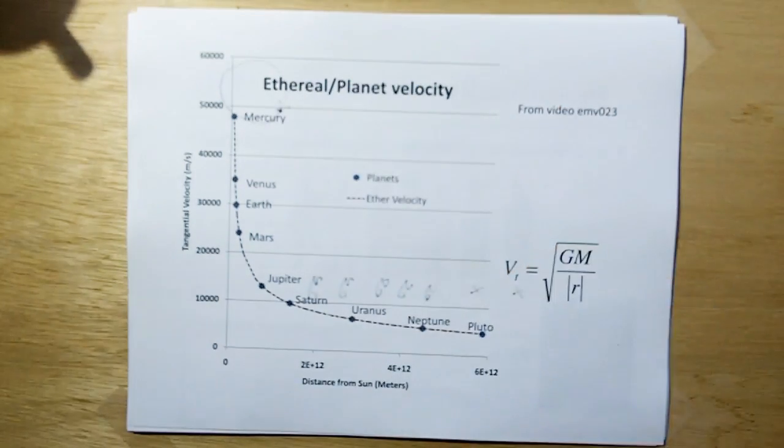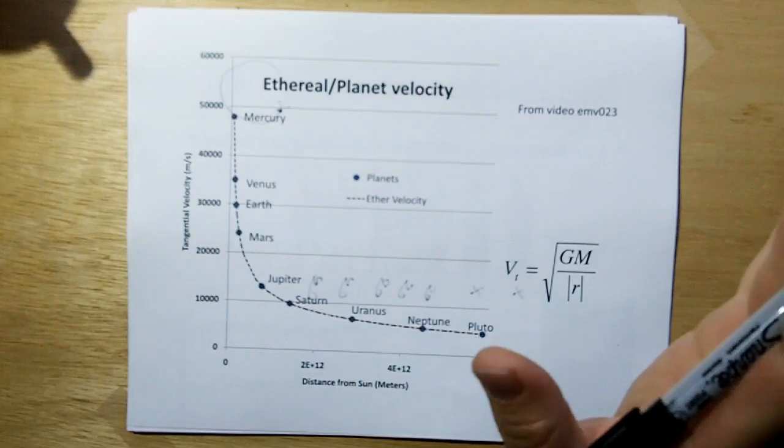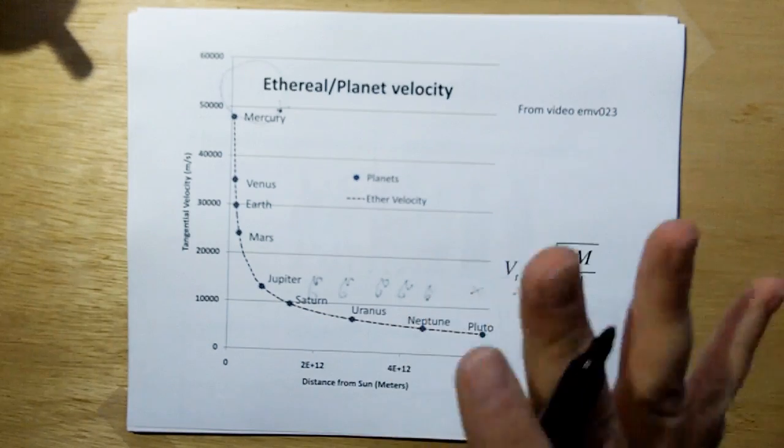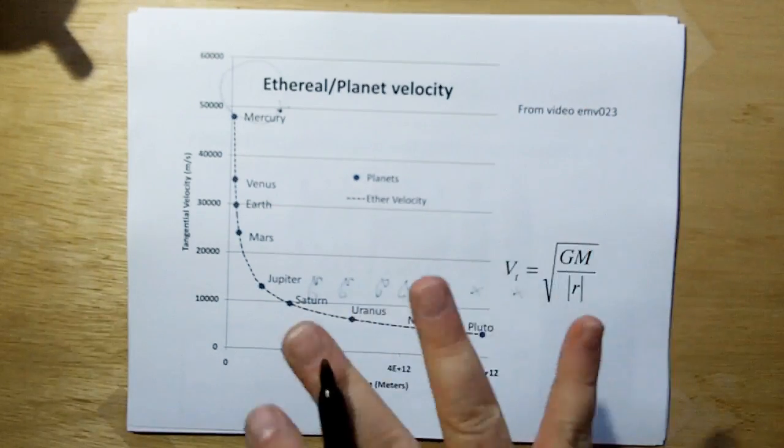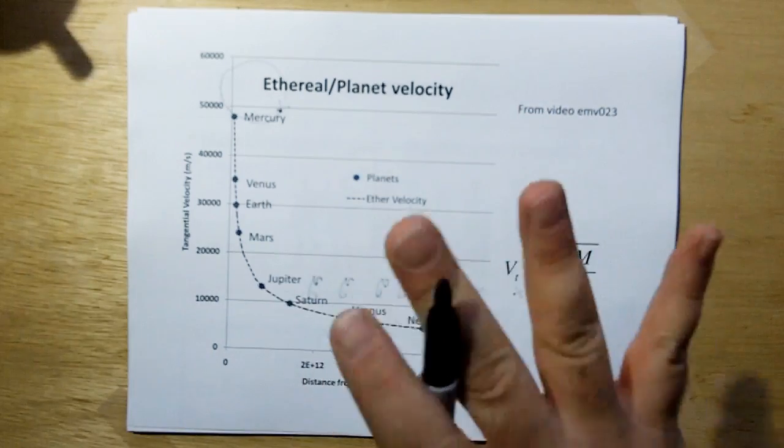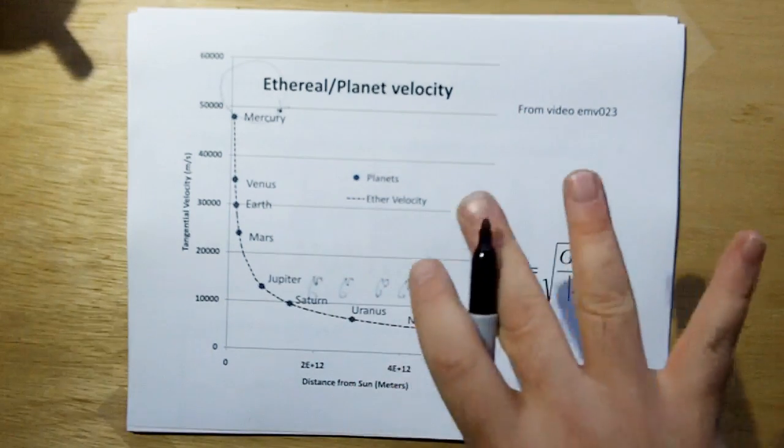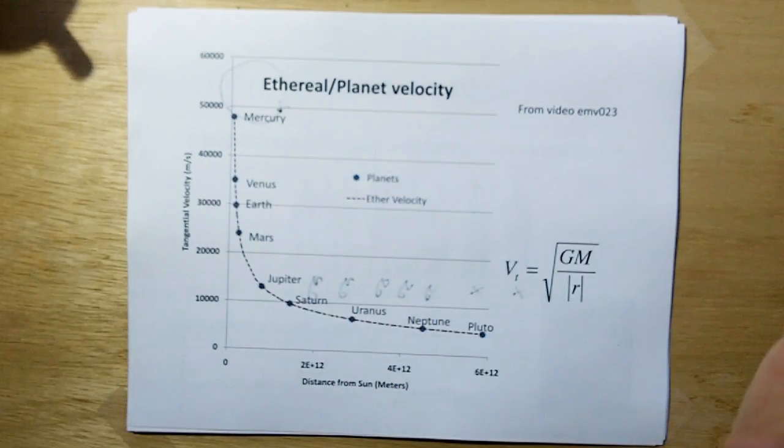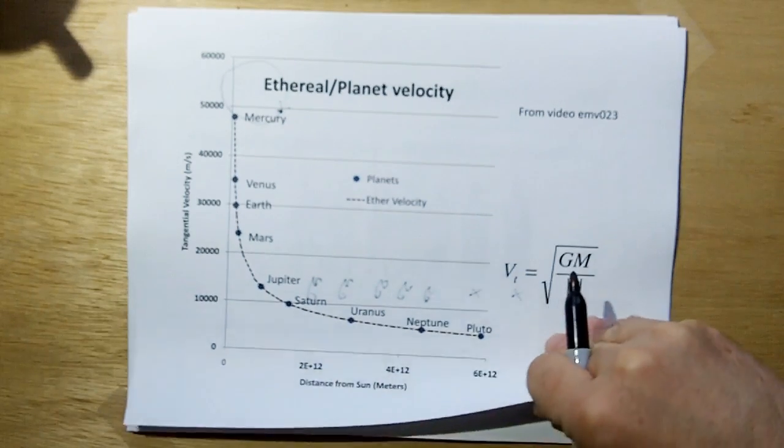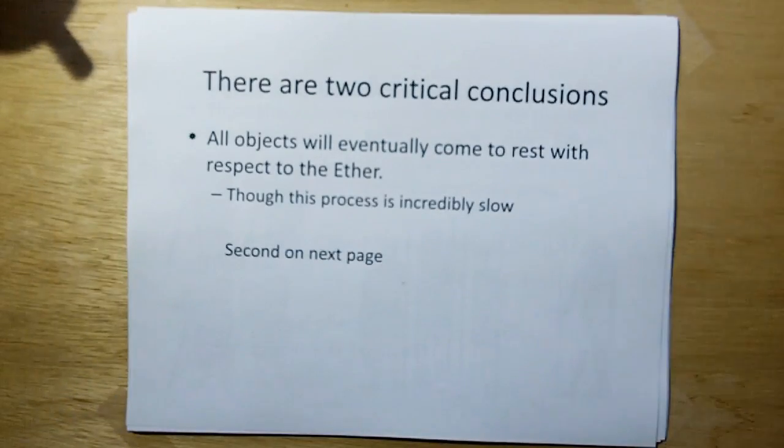Mercury and Pluto are a little bit off, because their orbits are not perfectly circular, they're more elliptical, but according to ethereal mechanics, they're going to lose their velocity relative to the ether and come into nice circular orbits over time. The reason why their orbits are elliptical is they were probably struck and knocked out of their nice, stable, circular orbits. So there's two critical conclusions here. All objects will eventually come to rest with respect to the ether, though this process is incredibly slow, probably happens over millions and millions of years.